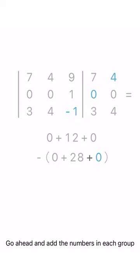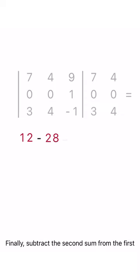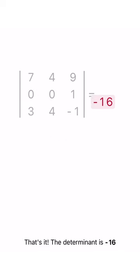Go ahead and add the numbers in each group. Finally, subtract the second sum from the first. That's it—the determinant is negative 16.